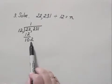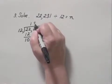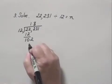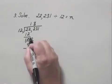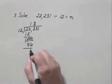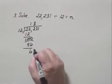12 goes into 102 eight times. 8 times 12 is 96. We subtract that from 102 and get 6. And we bring down the next digit which is 3.